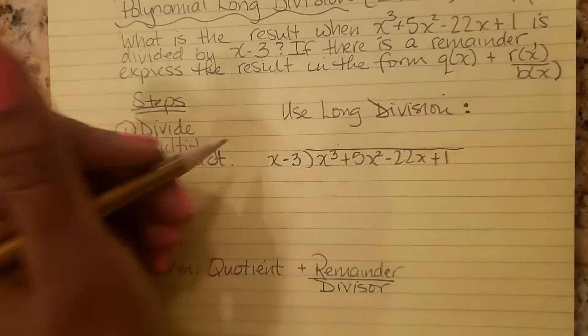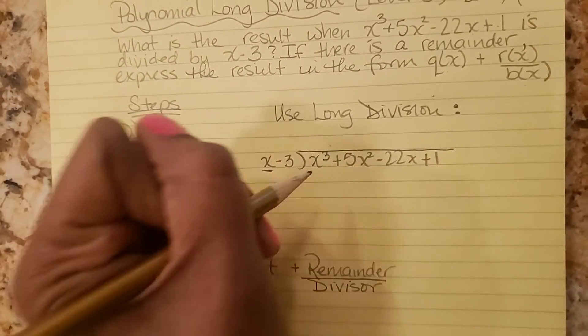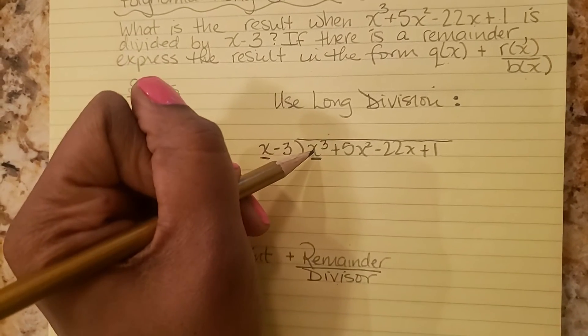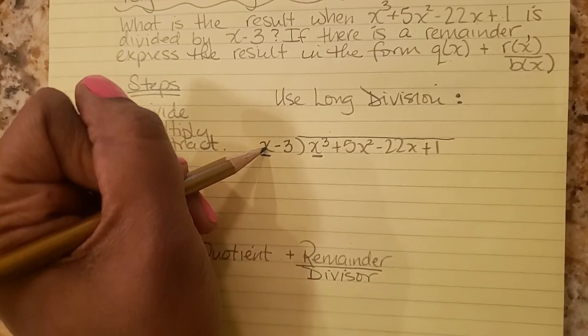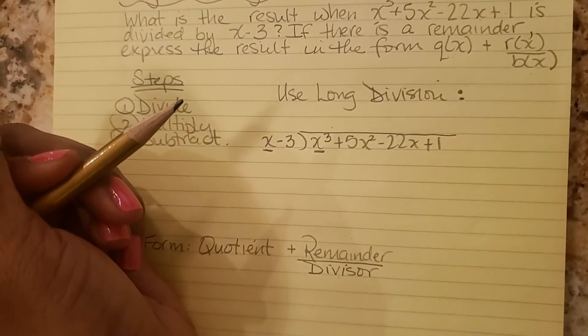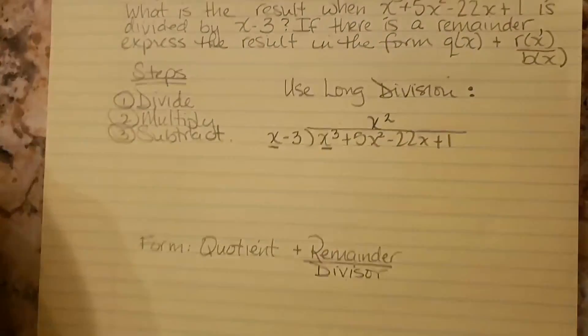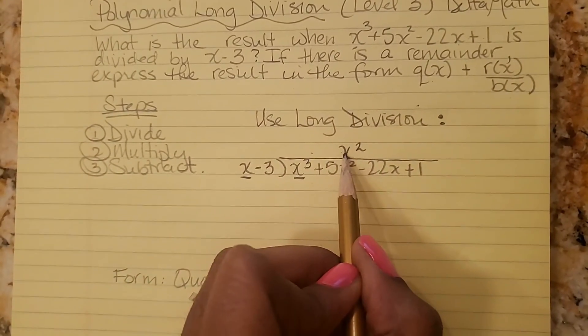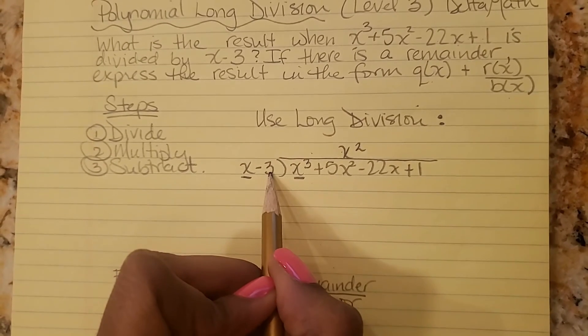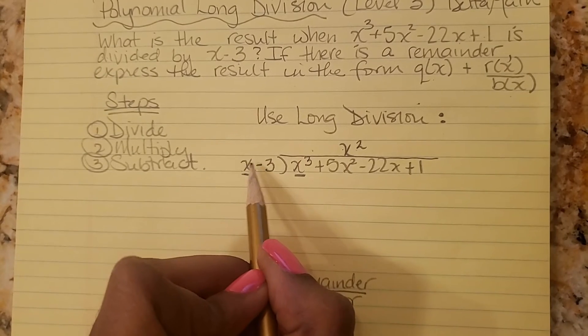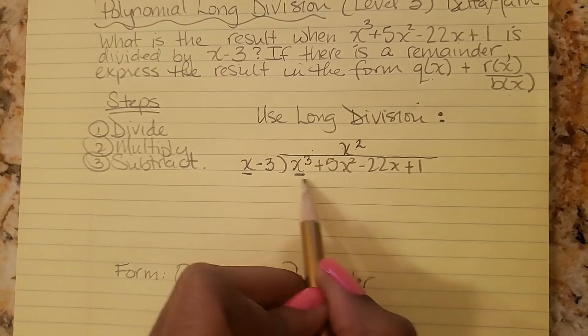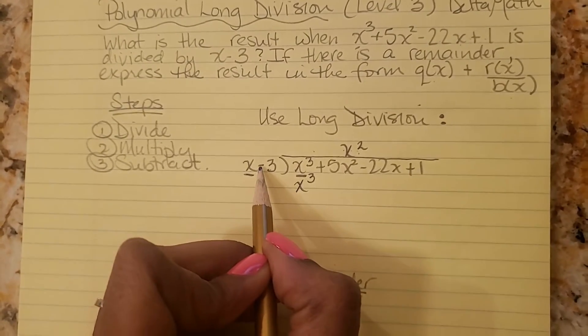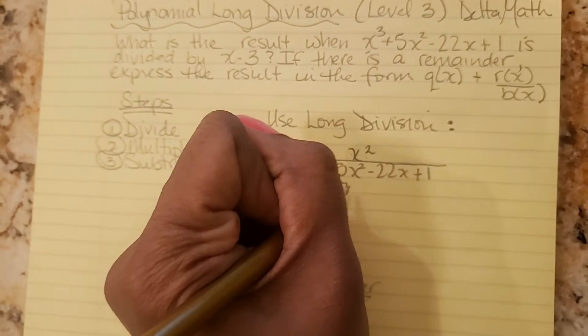And now the first step is to divide. So we look at the x and the x cubed, the first terms. So x into x cubed, or you can say x times what will give you x cubed? Well, x times x squared. So let's put x squared right there. I like to put it above the like term. The next step is to multiply. So we're going to multiply x squared times this whole thing, x minus 3. So x squared times x minus 3, and write your answer right below. So x squared times x is x cubed, and x squared times negative 3 is minus 3x squared.